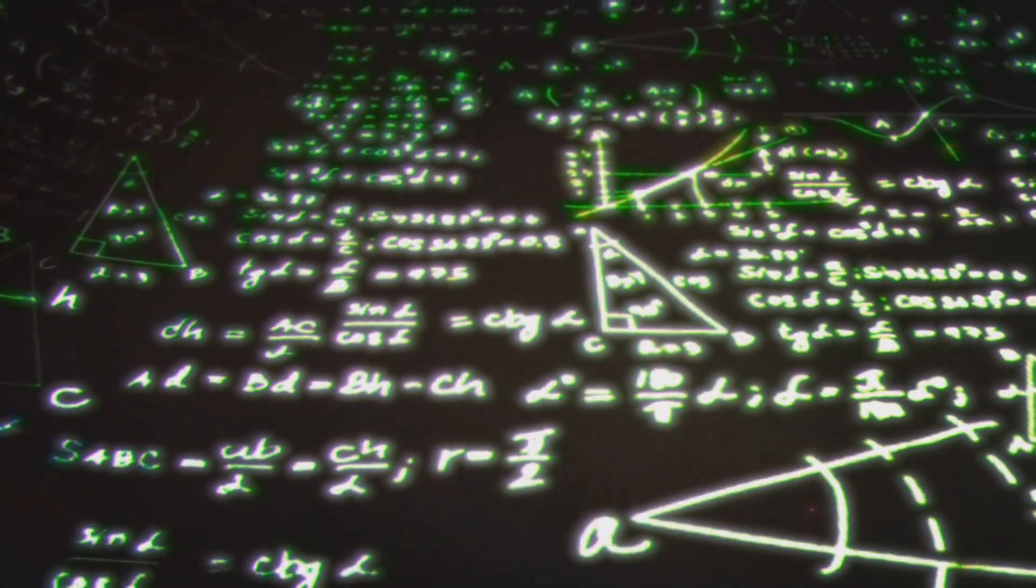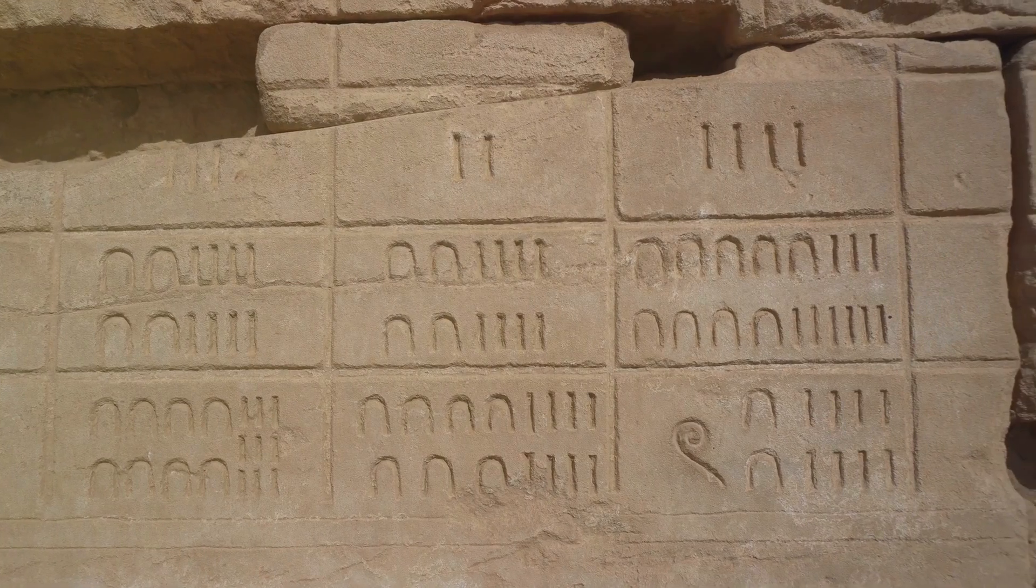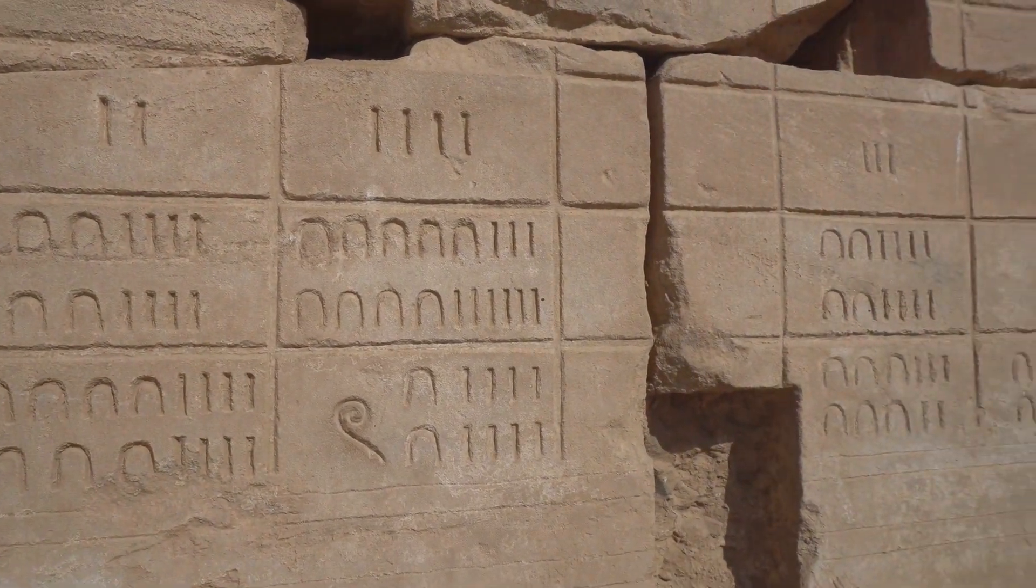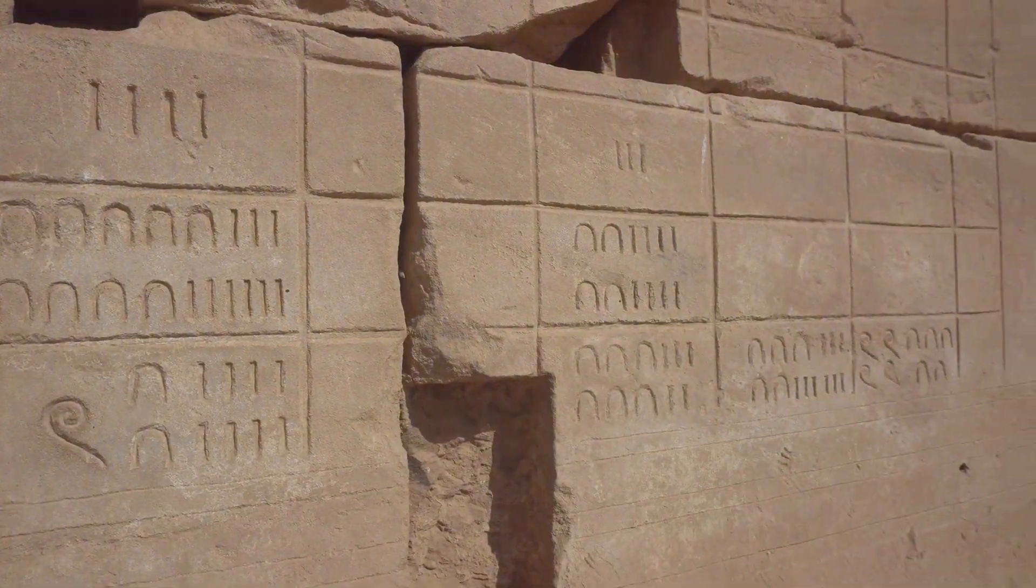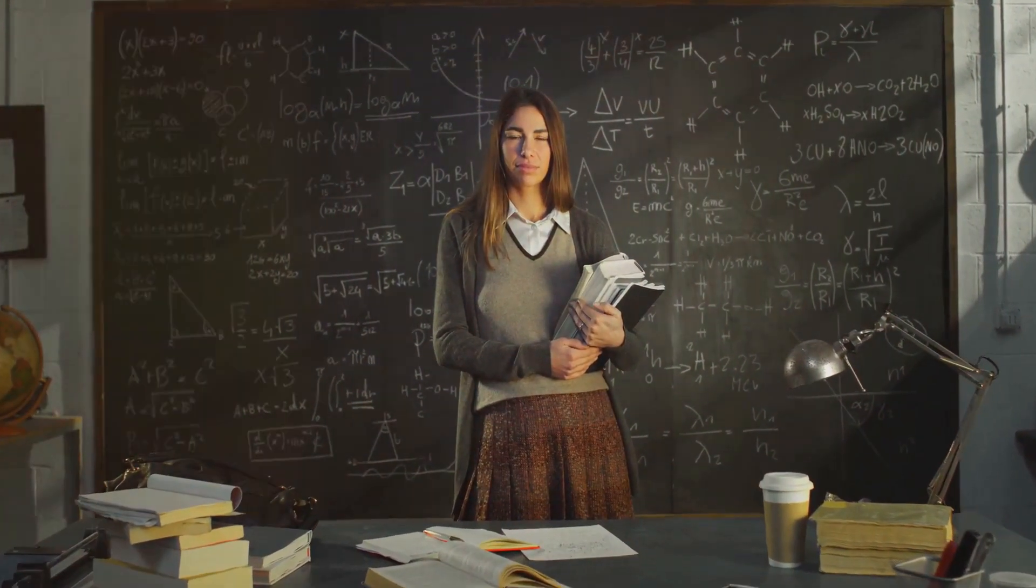Historically, mathematicians have used various methods to calculate pi. Each method reflects the mathematical knowledge and technology of its time. In ancient times, Archimedes used polygons to approximate pi. His work laid the foundation for future mathematicians.